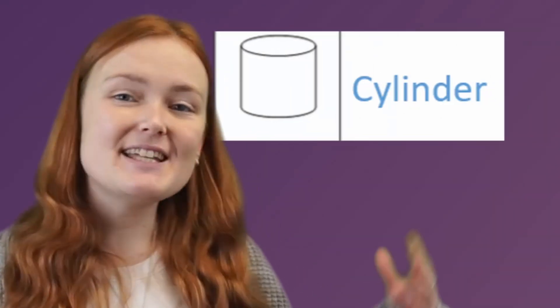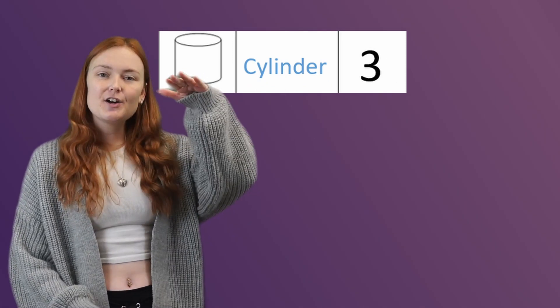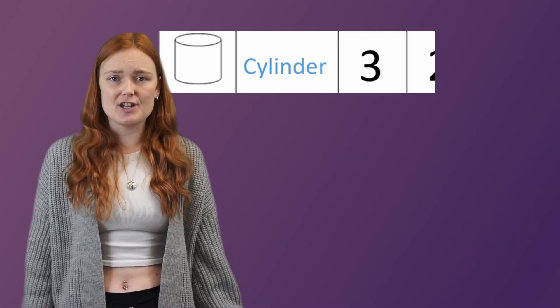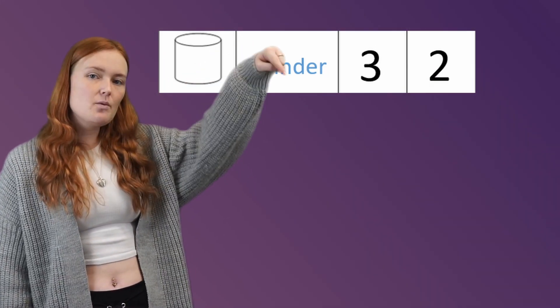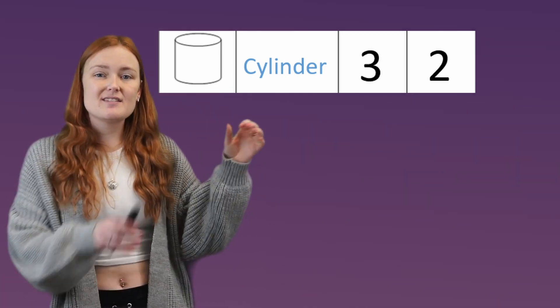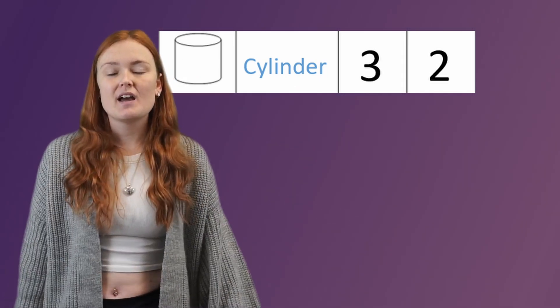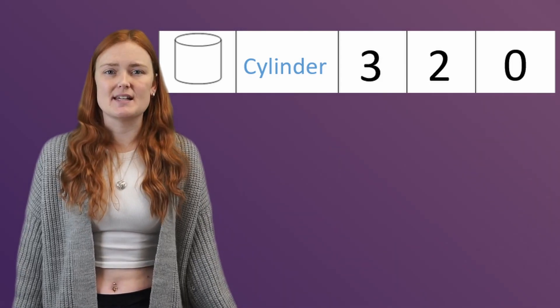Then we have a cylinder. A cylinder has 3 faces — it's got the circle on the top and the bottom, and then the rectangle that joins them together. It only has 2 edges, because the only edges are the ones that go round the circles. There are no edges down the side because it's curved, and it has no vertices because there are no corners.